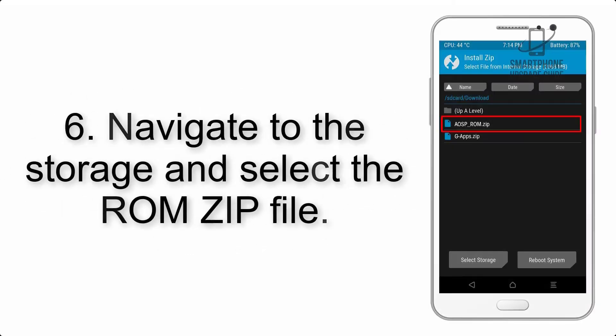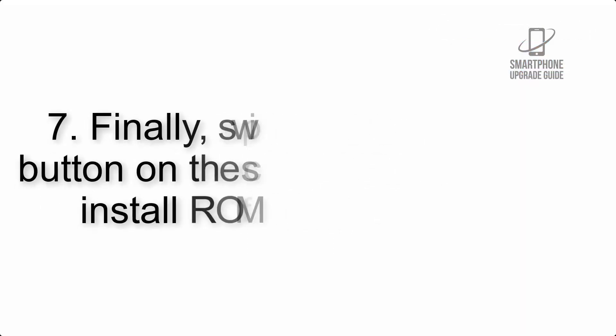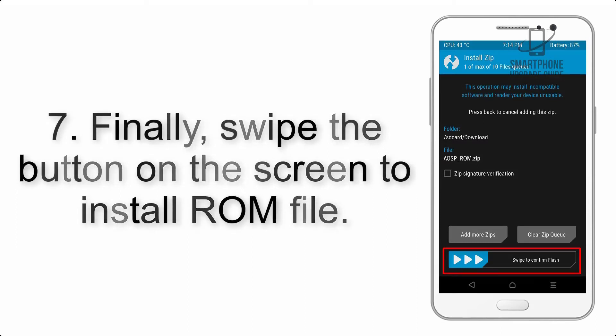Step 5: Go back to the recovery main screen and tap the Install button. Step 6: Navigate to the storage and select the ROM zip file. Step 7: Swipe the button on the screen to install the ROM file.